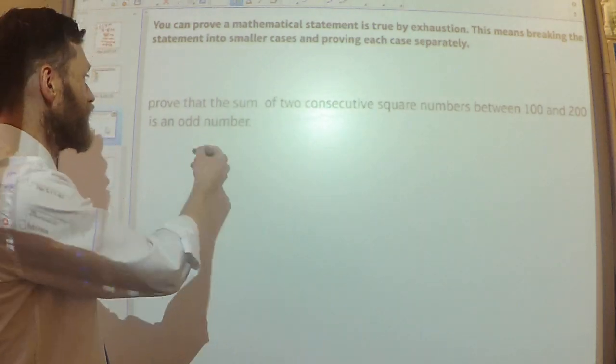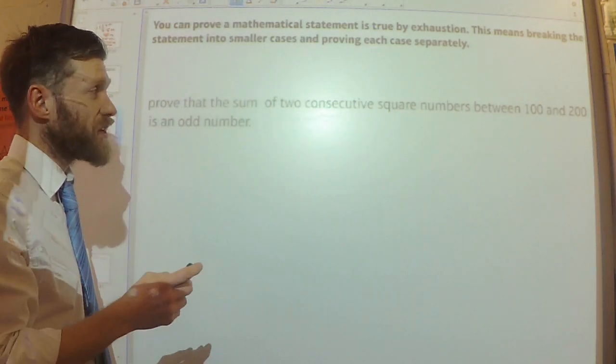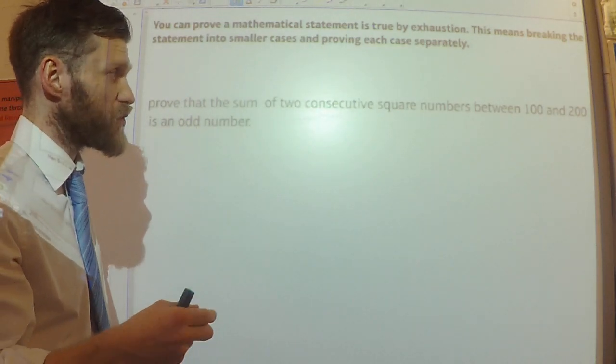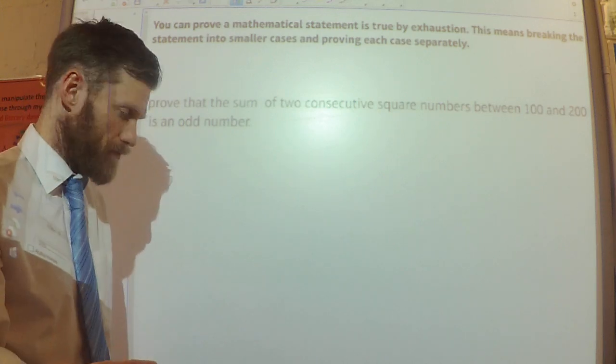So, for example, prove that the sum of two consecutive square numbers between 100 and 200 is an odd number.